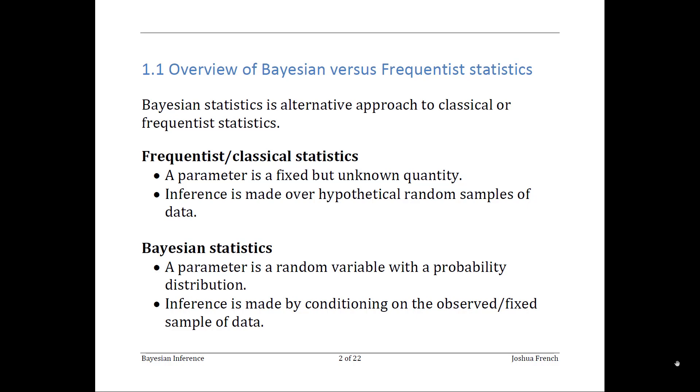There's actually a third kind of statistics called fiducial inference that's sort of in between the two, but it's not very commonly used. In both Bayesian and frequentist statistics, you assume a model for your data generating process, but then your approach to making inference about your model parameters is very different for the two different kinds of statistics.